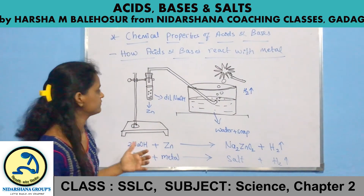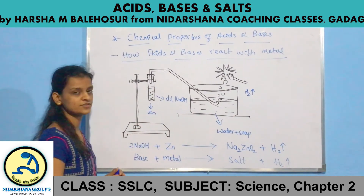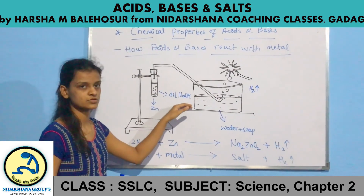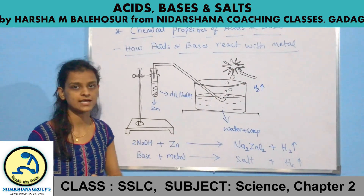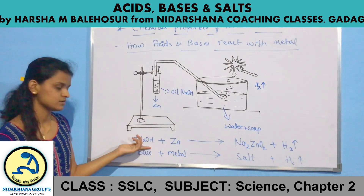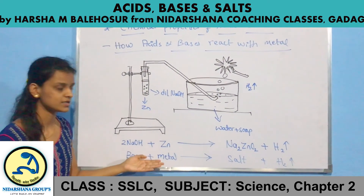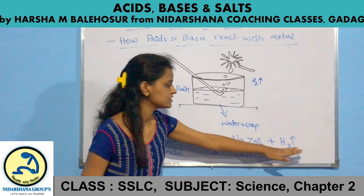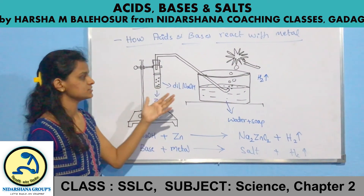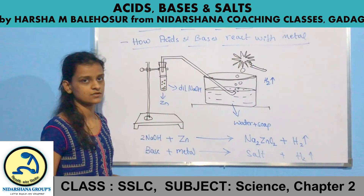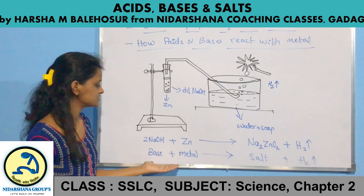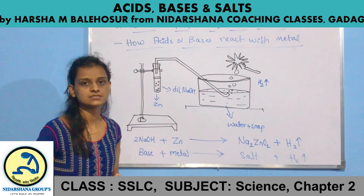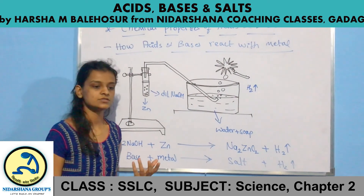We also check with base. Instead of sulfuric acid, we add NaOH (sodium hydroxide). The result is the same — hydrogen gas is evolved. The reaction is: NaOH + Zn → sodium zinc oxide (a salt) + hydrogen gas. So the general equation for base with metal: base + metal → salt + hydrogen gas. There are only some metals which react with both acid and base.